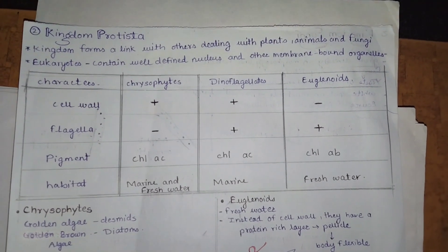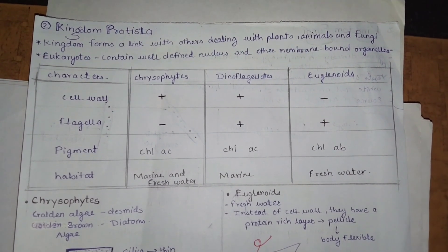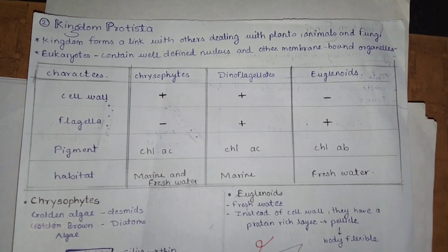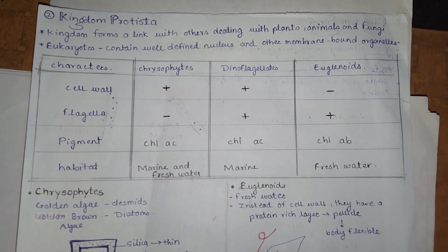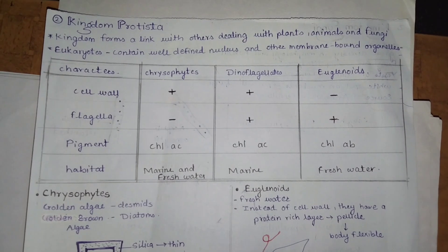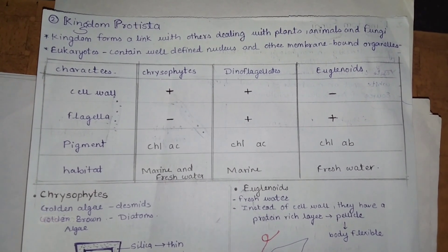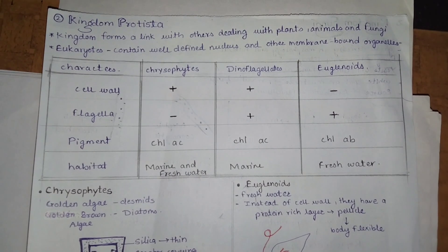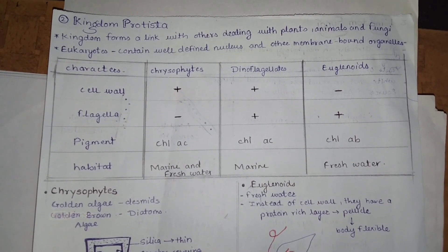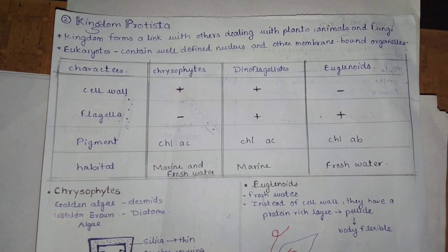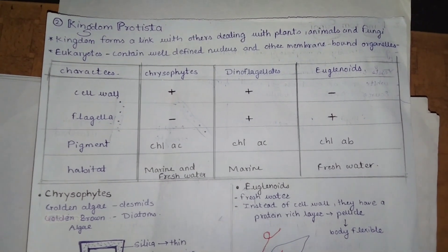You know that Protista is unicellular and eukaryotic. Kingdom Protista forms a link with others — dealing with plants, animals, and fungi. A very important question is: which kingdom forms the linking bridge with plants, animals, and fungi? The answer is Kingdom Protista.